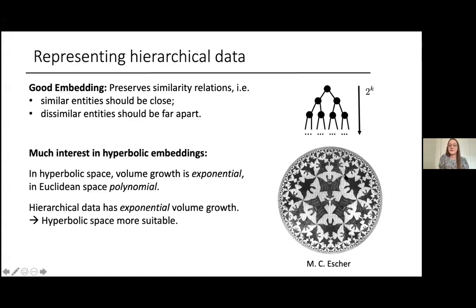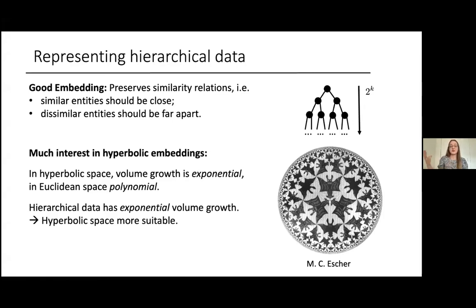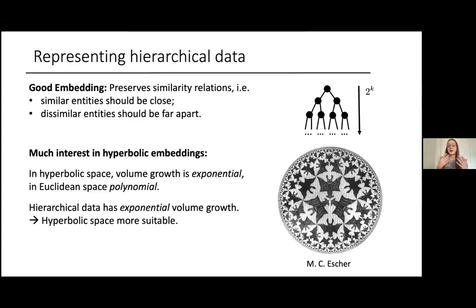To achieve good low-dimensional embeddings, the geometry of our space should align with the geometry of our data. For hierarchical data, which we can think of as trees, going down the levels of the tree the number of vertices grows as two to the k — exponential growth. To faithfully represent such a structure in low dimensions, we want a space with exponential volume growth. That's the case in hyperbolic space, but not in Euclidean space where volume growth is only polynomial. This is why hyperbolic spaces have become very popular for representing large-scale hierarchical datasets.